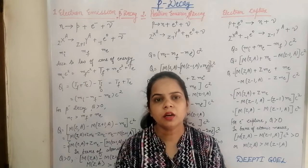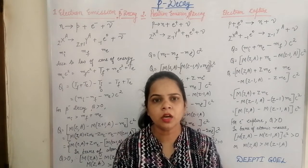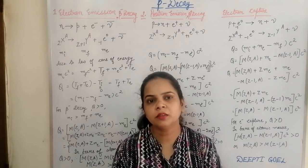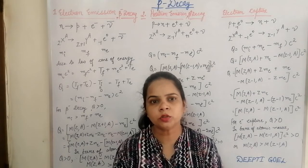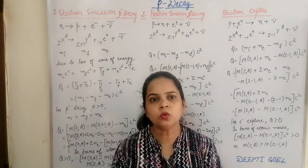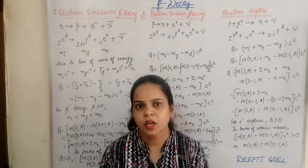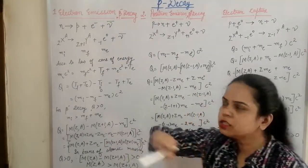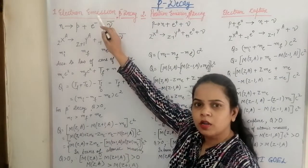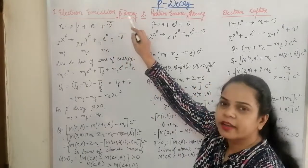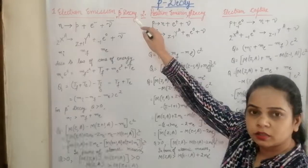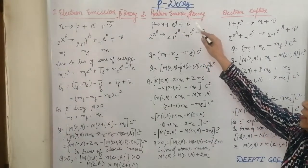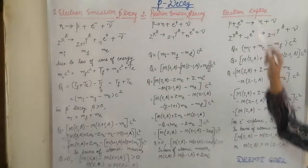The Beta Decay could be an electron emission, a positron emission, or it could sometimes be electron capture. So it decays by emitting an electron, positron, or capturing an electron to become a stable daughter nucleus. In the Beta Decay process we have three types: electron emission, also called Beta minus decay; second is positron emission, that is Beta plus decay; and third is electron capture.